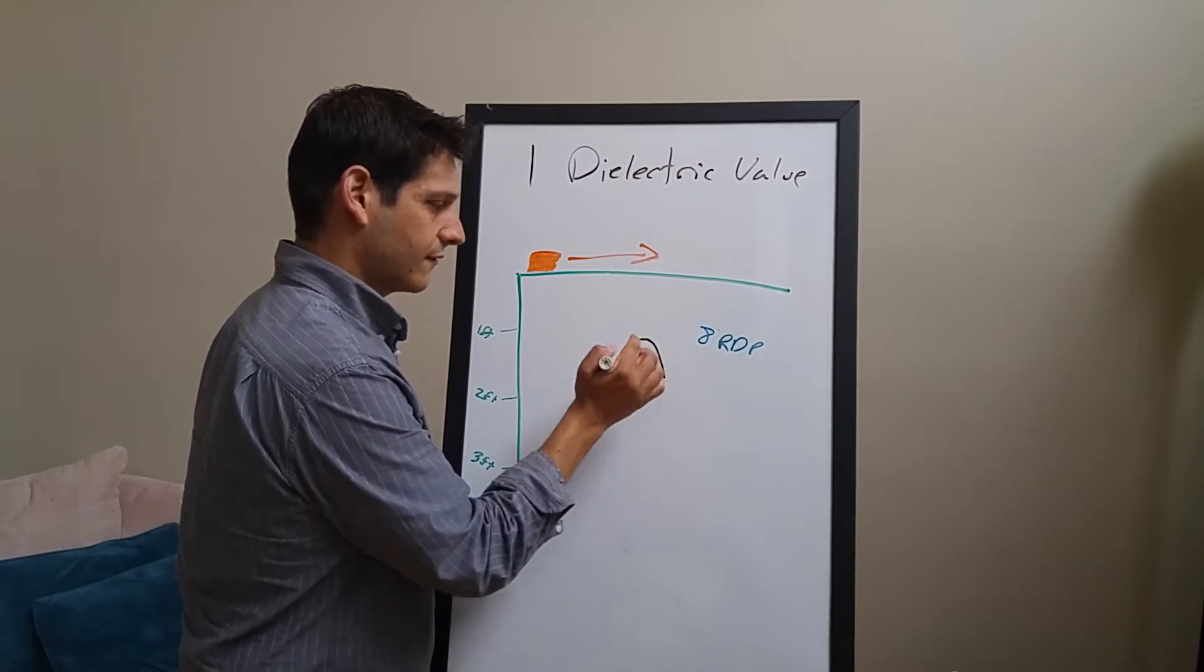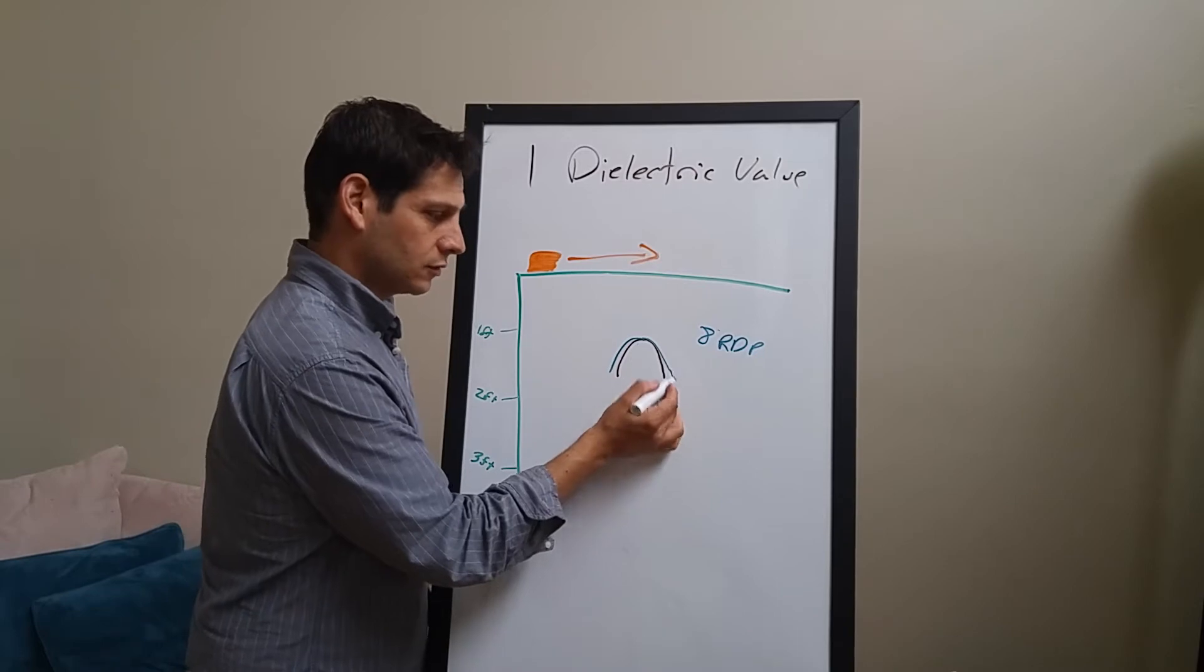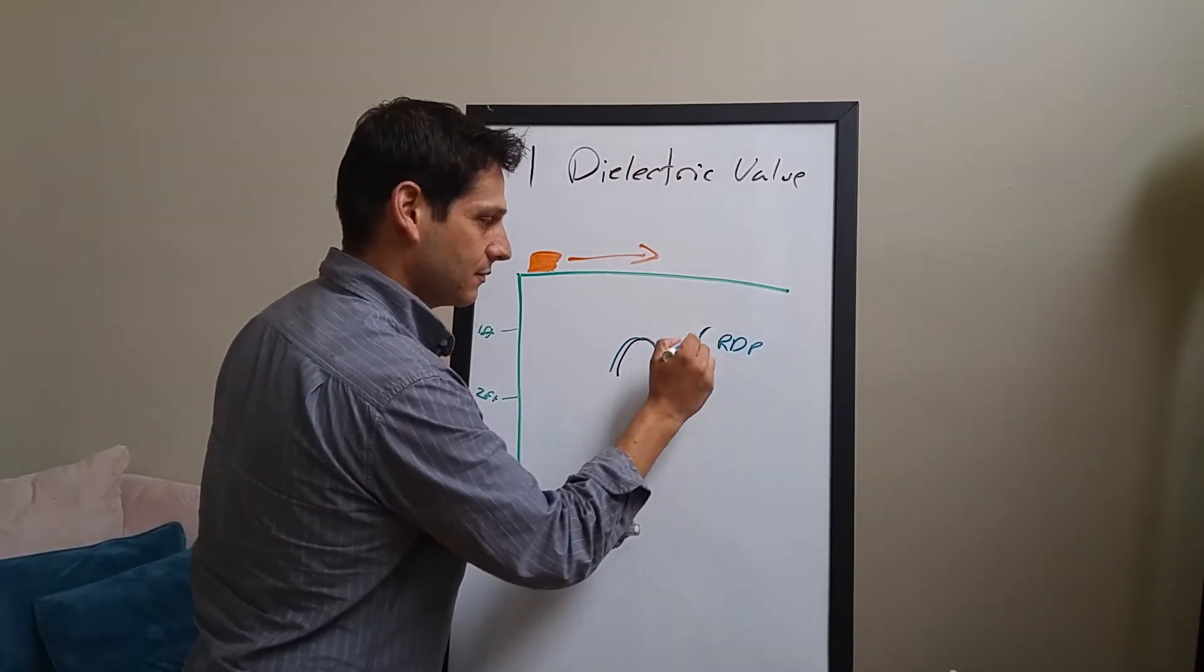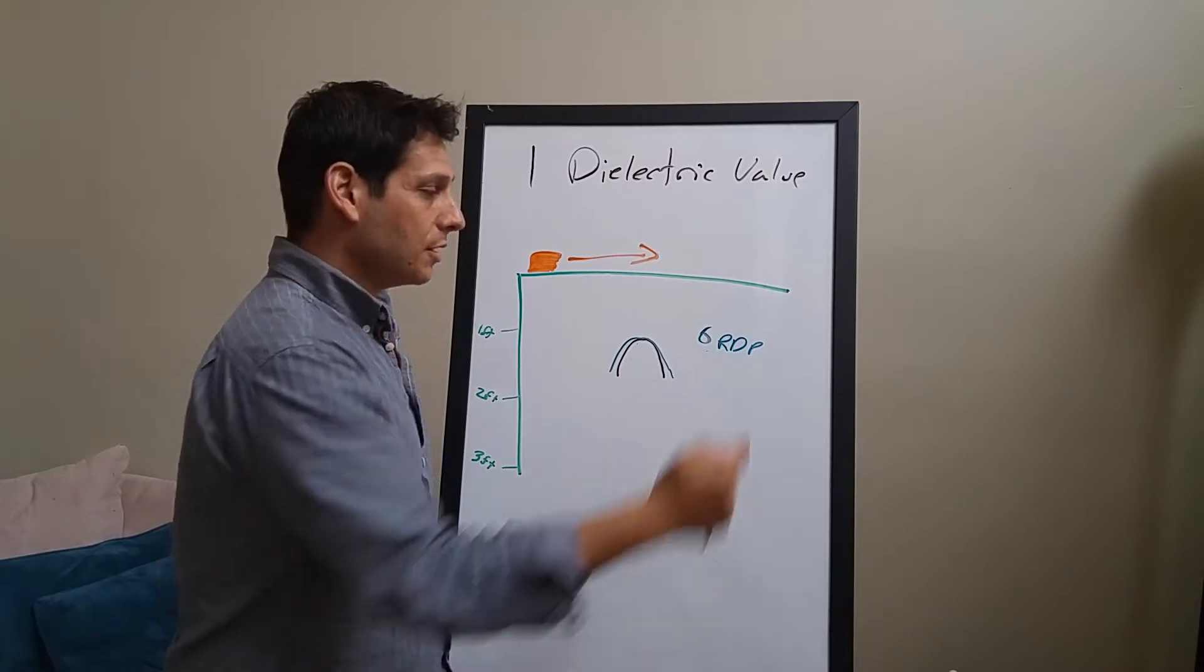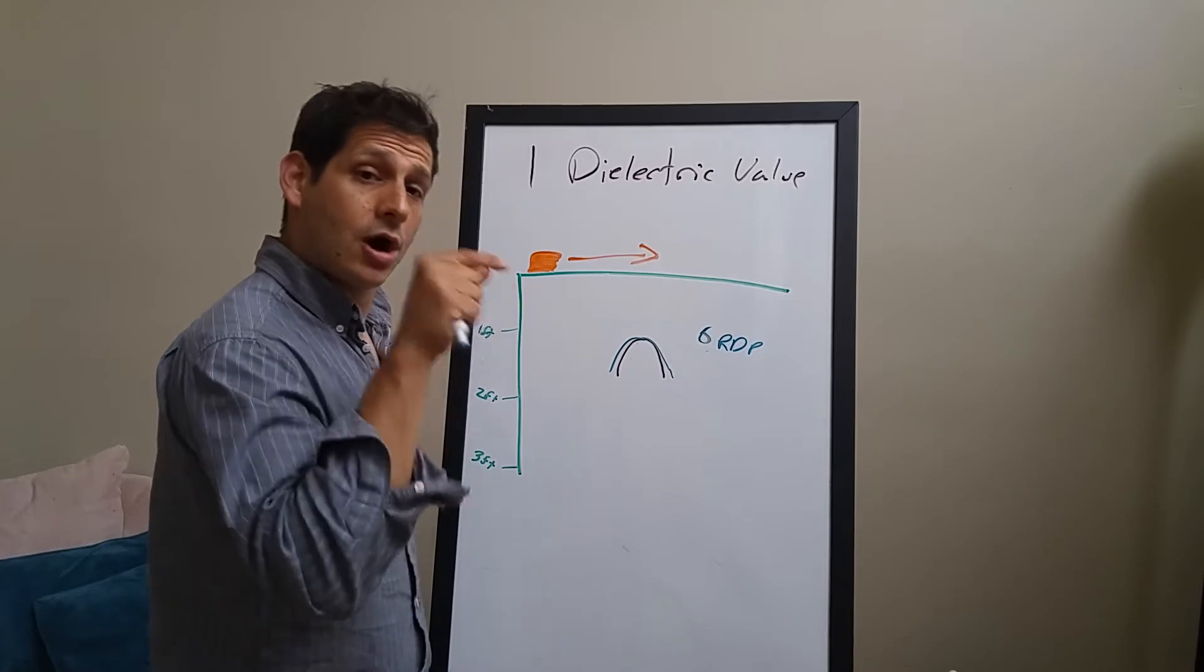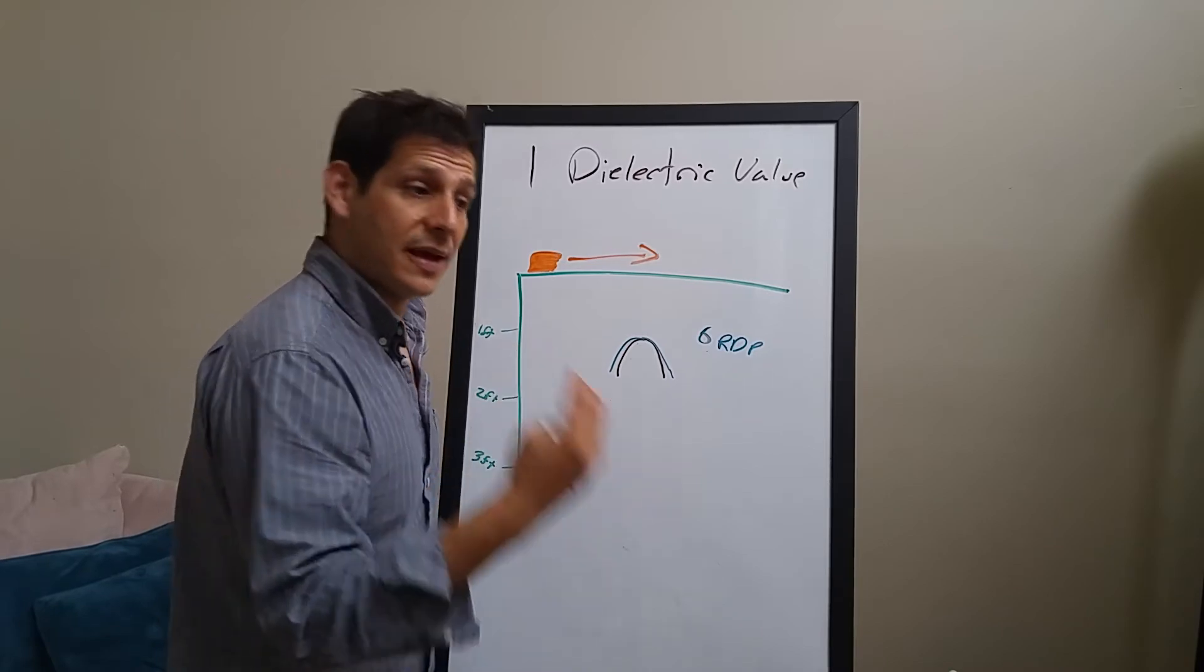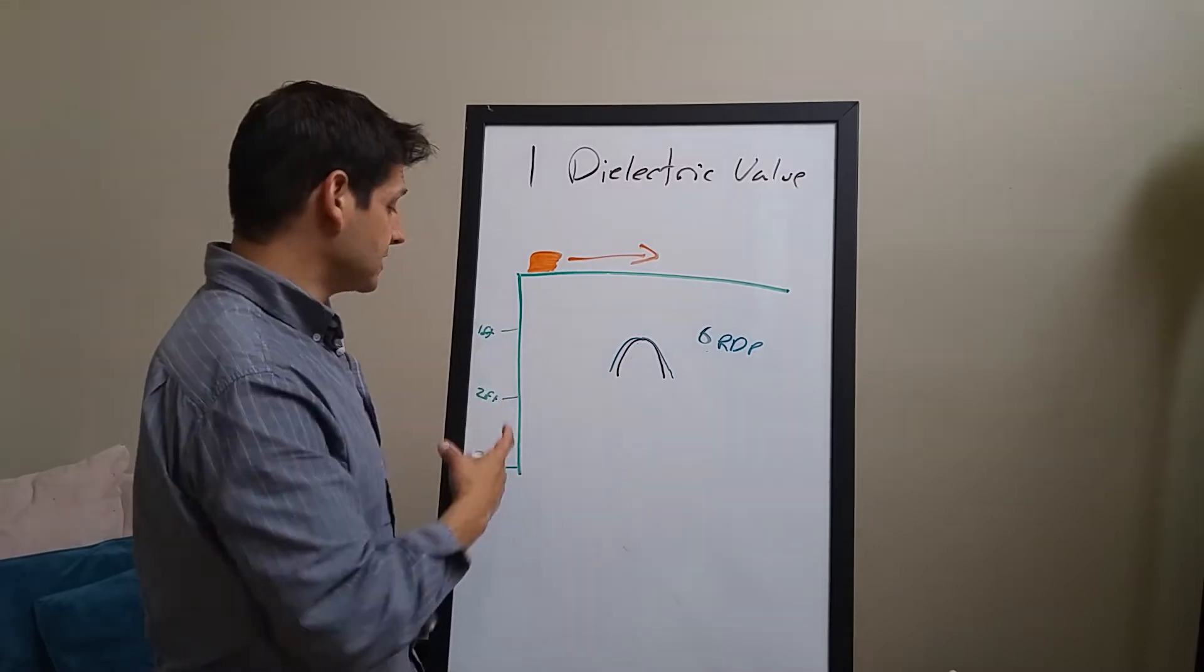What if, however, your model comes out a little bit broader than the actual hyperbolic reflection? Well, then it might be less and it might be six. Well, what's the power of going from seven to six or seven to eight? How much of an effect is that going to have on your data? Well, it depends. It depends on what frequency you're using, depends on how deep you're actually looking into the subsurface.